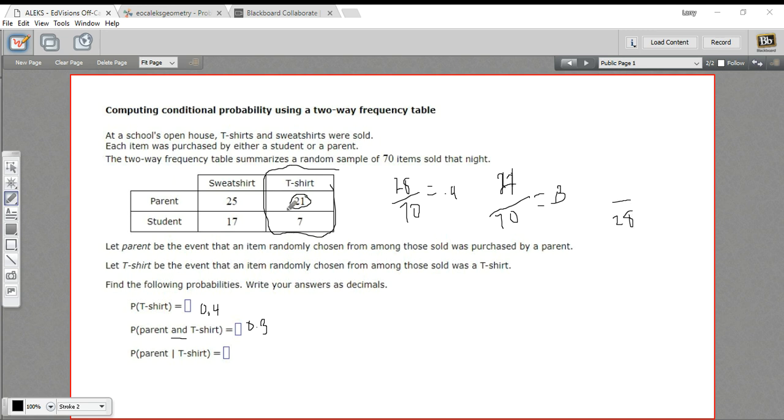And the top is parent. So that's the 21 line. So 21 divided by 28, and I think that's 0.75. So 0.75 is the probability of a parent given a t-shirt.